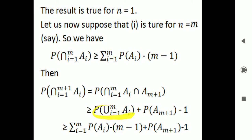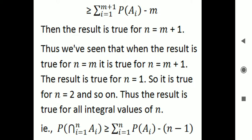We substitute the assumed result. That is, summation i equals 1 to m of probability of Ai minus (m minus 1), plus probability of A(m+1) minus 1. This is greater than or equal to summation i equals 1 to m plus 1 of probability of Ai minus m. So the result holds for n equals m plus 1. Thus the result is true for all integer values of n.